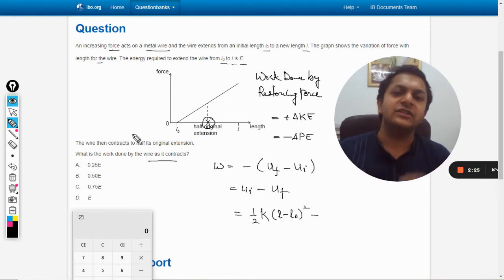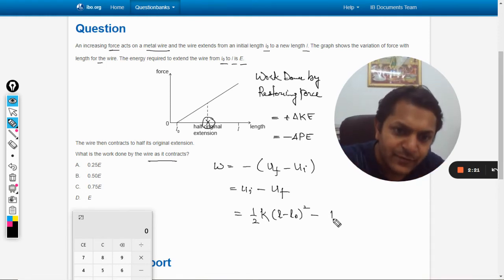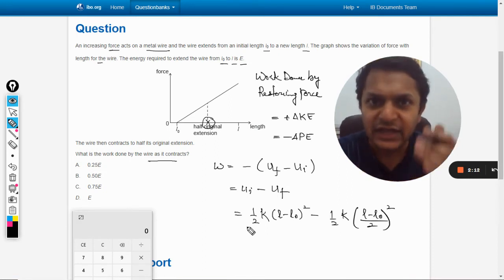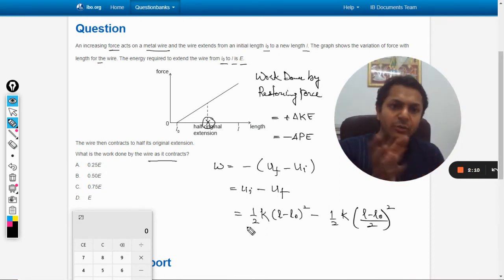Finally, it is at this location, half of the extension. So the extension is now half, so we are now left with (L minus L naught) divided by 2, whole squared. The remaining extension is (L minus L naught) by 2 from here.